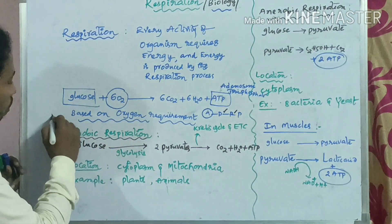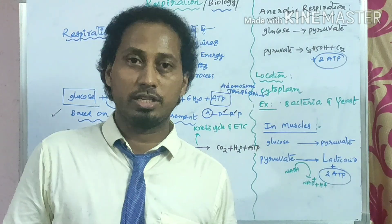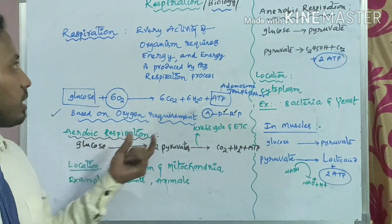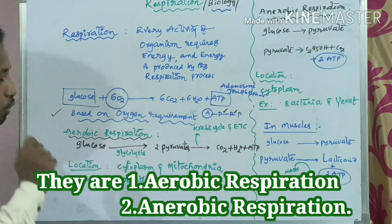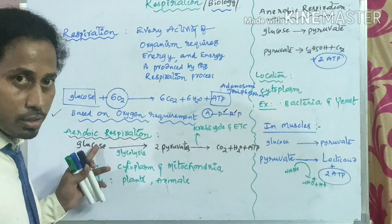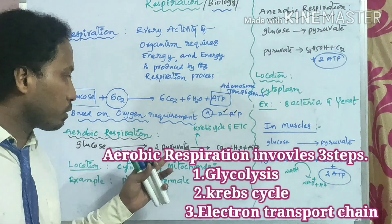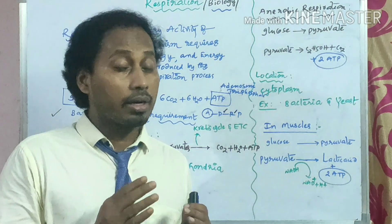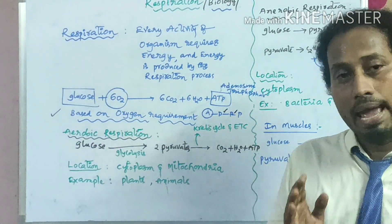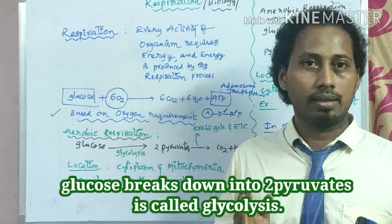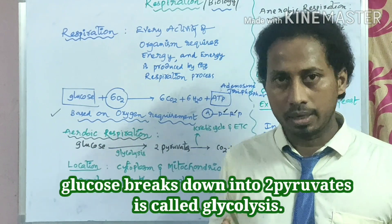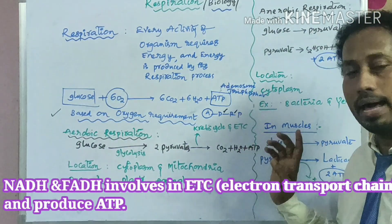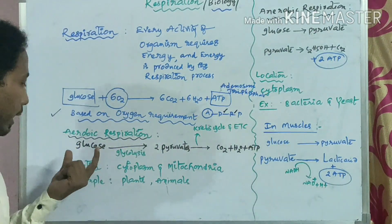Based on oxygen involvement — oxygen requirement — respiration is of two types: one is aerobic respiration and another is anaerobic respiration. In aerobic respiration, glucose undergoes glycolysis and produces two pyruvates. After that, the pyruvate undergoes a series of chemical reactions in the mitochondria, followed by the electron transport chain. The final byproducts are CO2 and H2O, along with ATP.